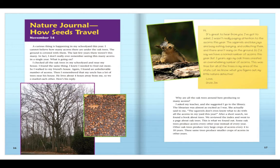Hi, it's great to hear from you. I've got to admit I wasn't really paying attention to the acorns this year. The squirrels and blue jays are busy eating, burying, and collecting them, and there aren't as many on the ground. So I'd say we have a normal number of acorns this year. But three years ago, my oak trees created an overwhelming number of acorns. This was true for all the trees in my area of the state. Let me know what you figure out, my little nature detective. Love, Uncle Jim.